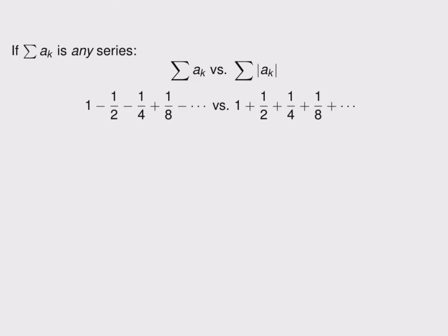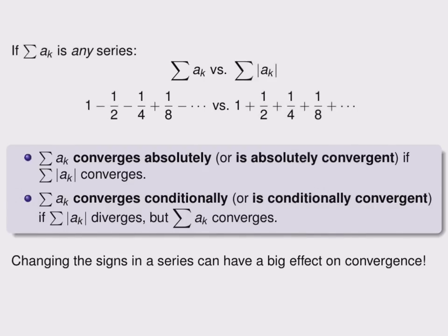It turns out that this series with absolute values is important in terms of determining convergence of related series. Here's two new words that we should know. For example, the original series, the series a_k, converges absolutely, or is absolutely convergent, if the series with absolute values also converges.